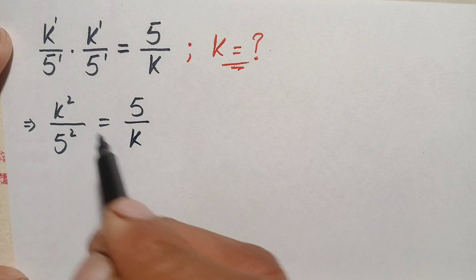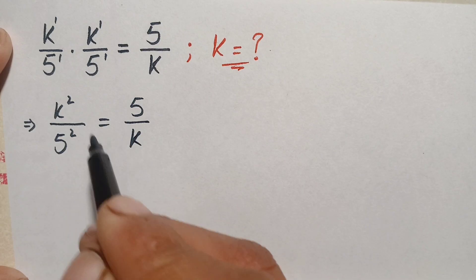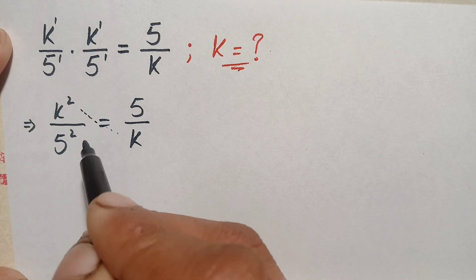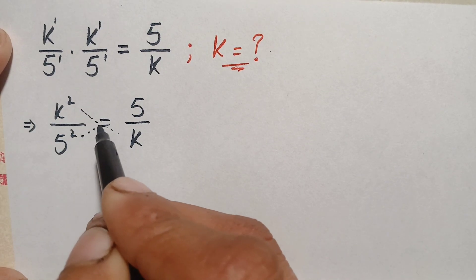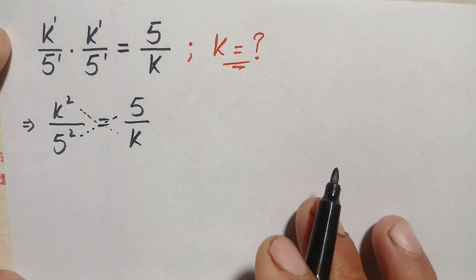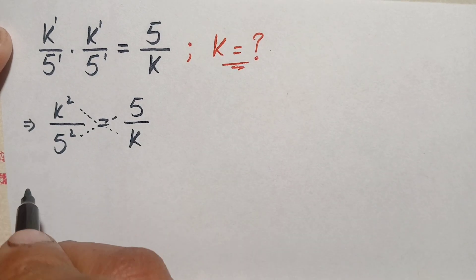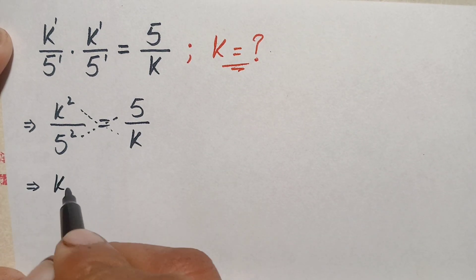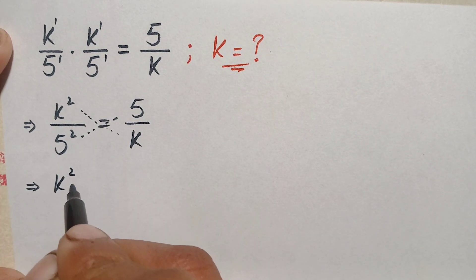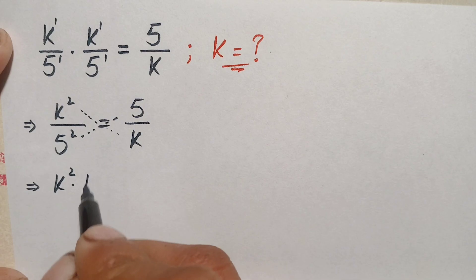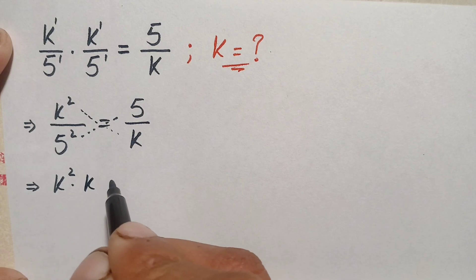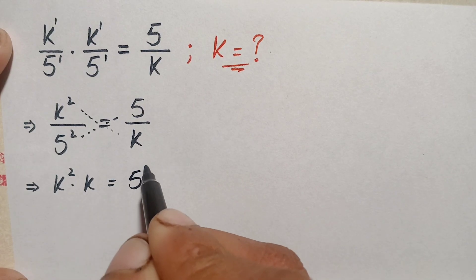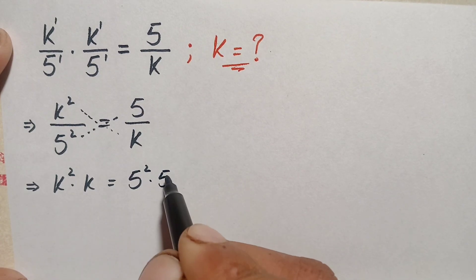Now here we will cross multiply these two fractions. So we multiply k squared with k and 5 squared with 5. This gives us k squared times k is equal to 5 squared times 5.